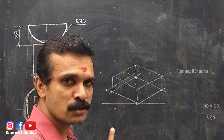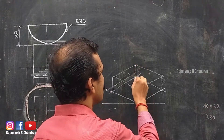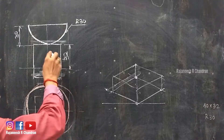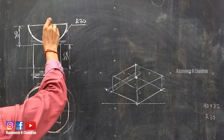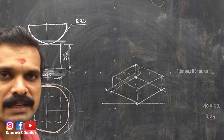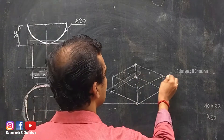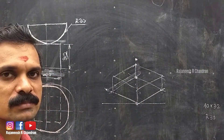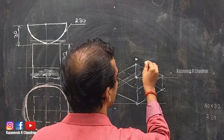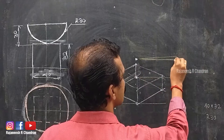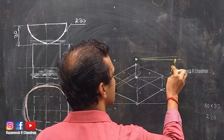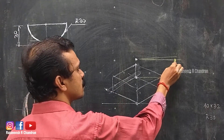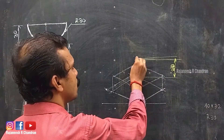With those reduced values we can complete the square block and obtain the center of the top face of the square block. From that center, the center of the hemisphere's base circle will be at a height of 30 × 0.816. Take 30 × 0.816 and locate that point above the center.